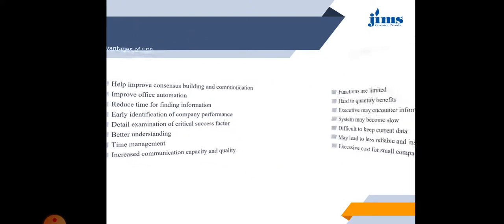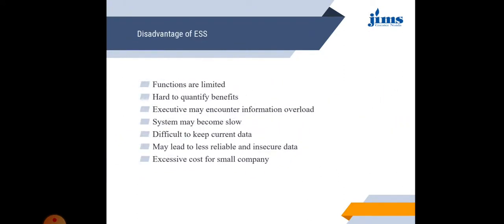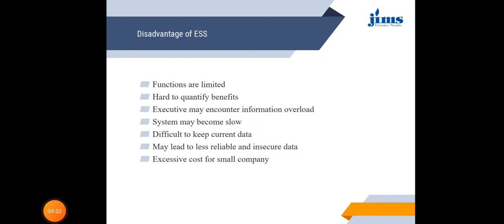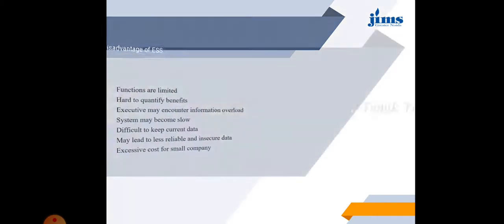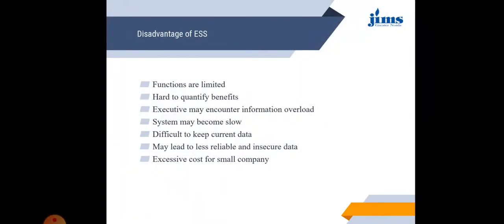Disadvantages of executive support systems are: functions are limited, hard to quantify benefits, executives may encounter information overload, the system may become slow, difficult to keep current data, may lead to less reliable and insecure data, and excessive cost for small companies. That is all about the executive information system.